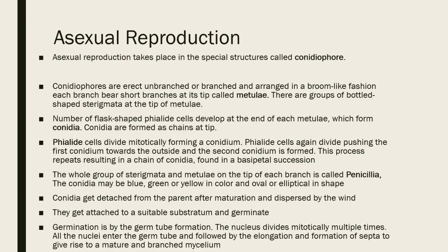Asexual reproduction takes place by special structures called the conidiophores and conidia. These are stick-like structures. The conidiophores are erect, unbranched or branched. The unbranched type is completely straight and erect, while the branched type has a broom-like fashion — it looks like a tree structure.